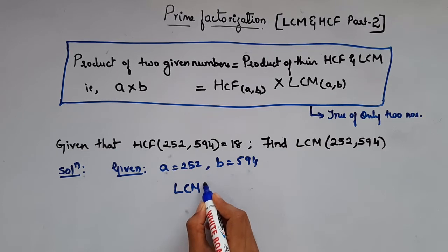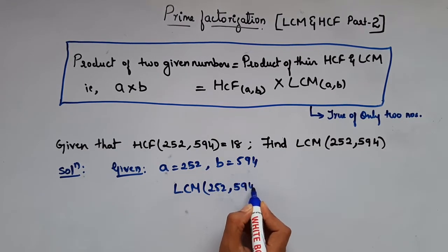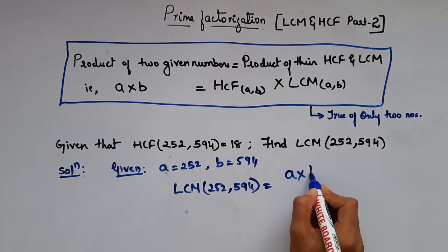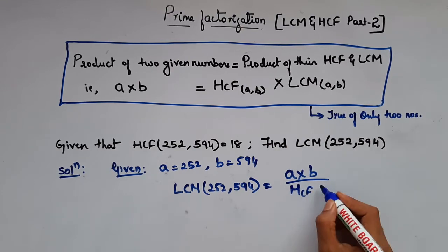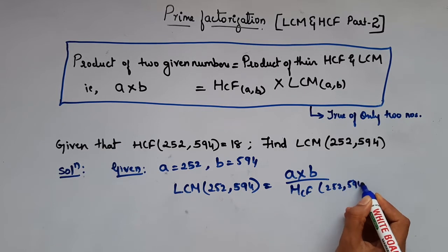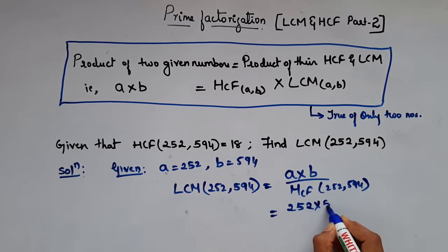We have to find LCM, so LCM of 252 and 594 is equal to a times b by HCF of 252 and 594. So substitute all the values: 252 times 594 by HCF is given as 18. So this will give the value 8,316.